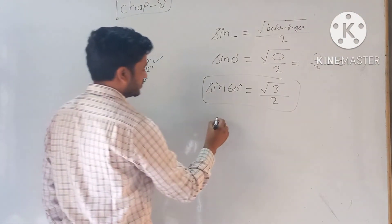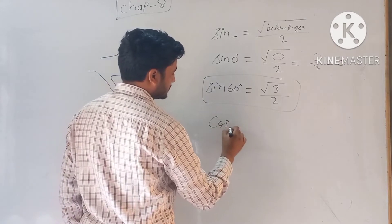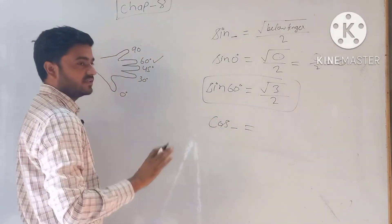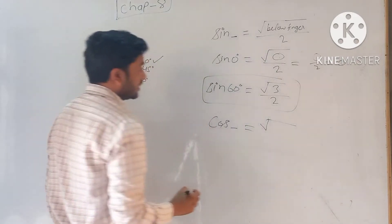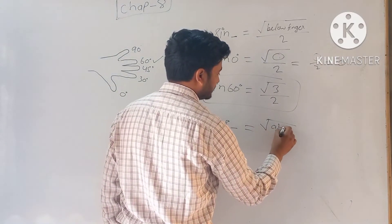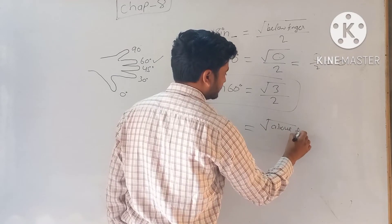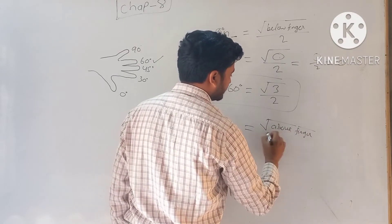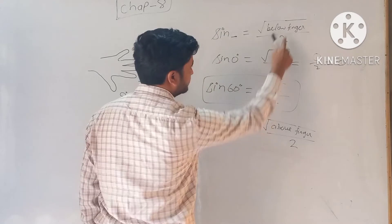Now let's talk about cos. Cos is the same formula, but instead of below finger, it's the above finger. Under root, same - below finger becomes above finger, upon 2.